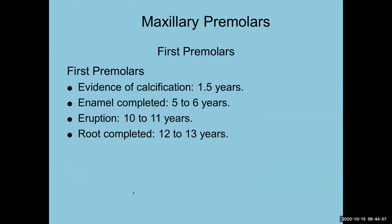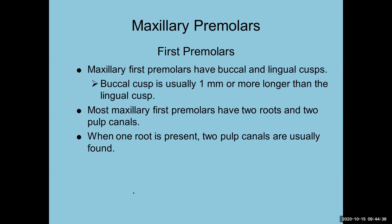For maxillary first premolars: evidence of calcification at 1.5 years, enamel completion 5–6 years, eruption 10–11 years, root completion two years after that. Mandibular teeth generally erupt before maxillary. Maxillary first premolars have both buccal and lingual cusps, but the buccal cusp is usually one millimeter or more longer than the lingual — so it's not a flat occlusal table. Most maxillary first premolars have two roots and two pulp canals; when one root is present, two pulp canals are usually still found.